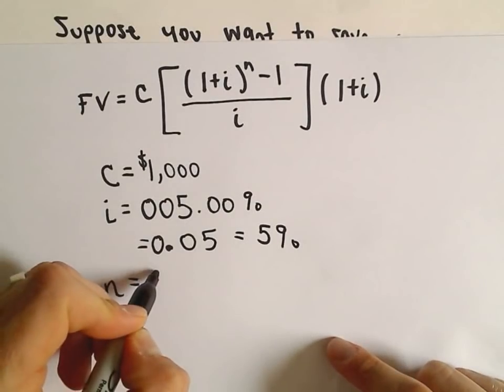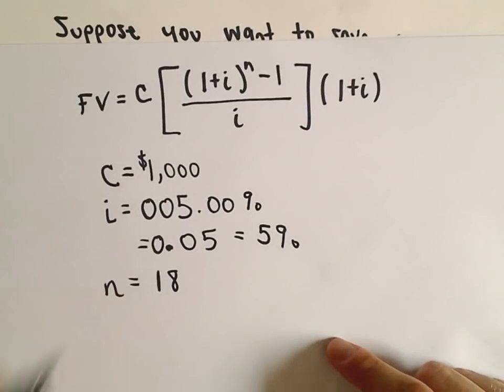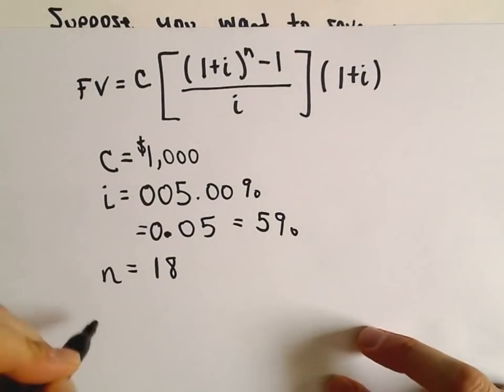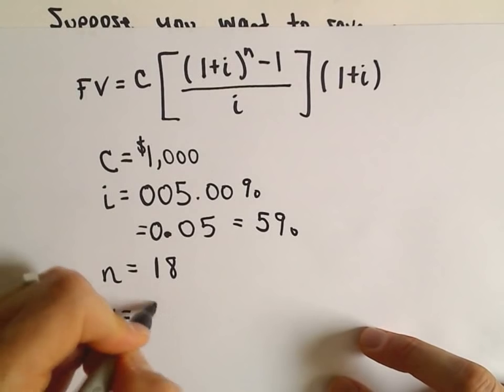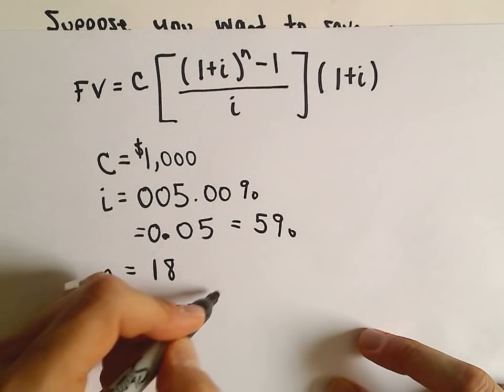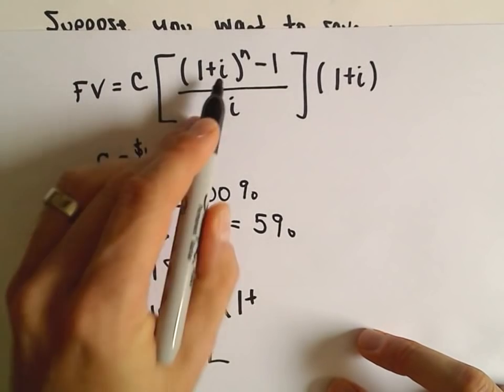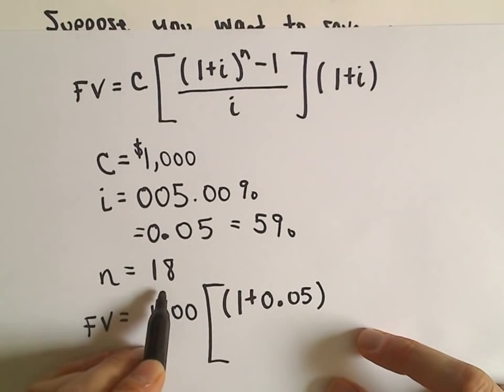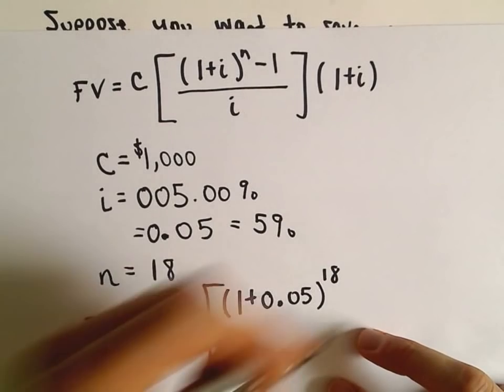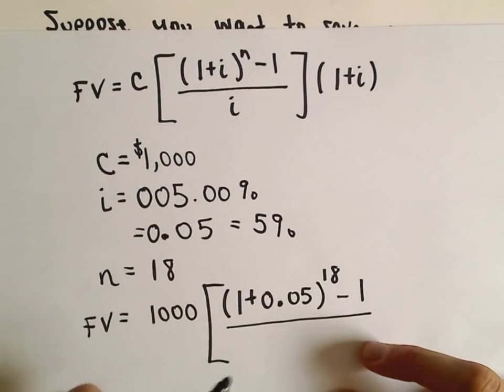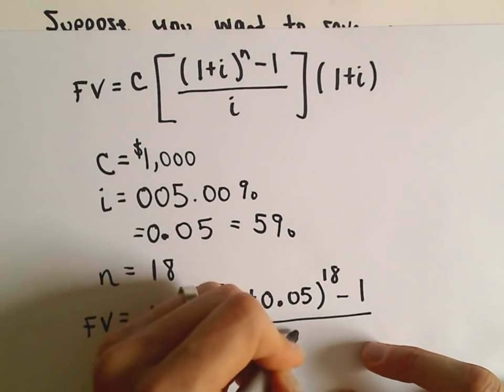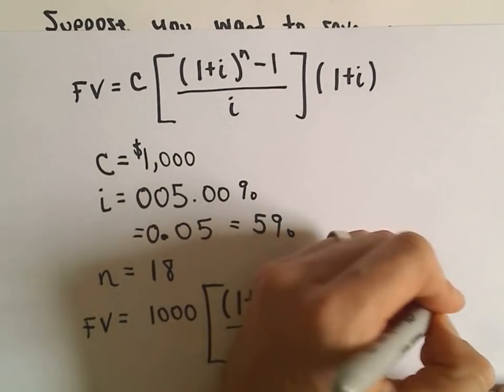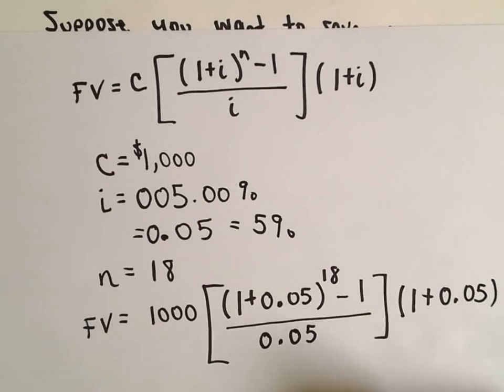So n is going to be the number of periods, which in this case it'll be 18 because we're going to do this for 18 years. So we have to just basically fill in our formula and just do a little bit of arithmetic. So again, c is 1,000. And then we have 1 plus 0.05, all raised to n which is 18, minus 1, divided by 0.05. And then we multiply that by 1 plus 0.05.